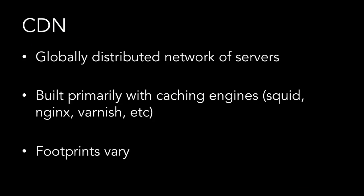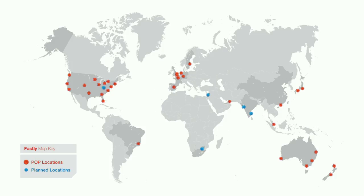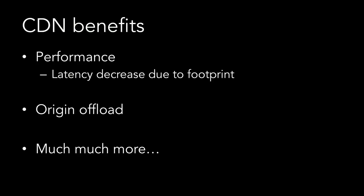Just to review: a CDN is a globally distributed network of caches spread all over the world. CDN caches cache content, and depending on which vendor you look at, footprints vary. This is what ours looks like. CDNs have a bunch of benefits, but you can distill everything down to three. Things are faster because you've gotten your content closer to your users. You get a lot of stuff offloaded from your origin, so your origin costs go down. And you can do a lot more with a CDN.